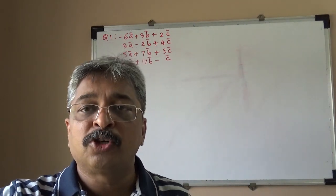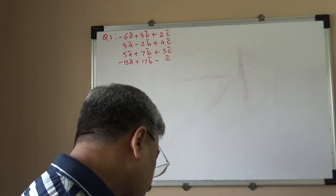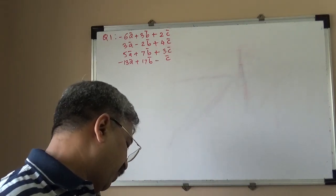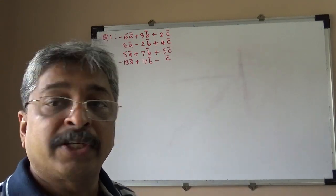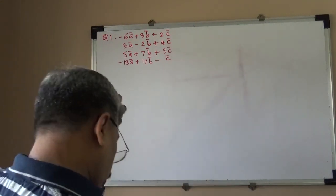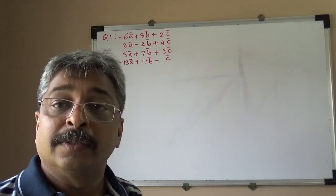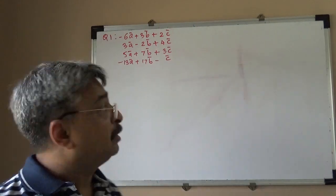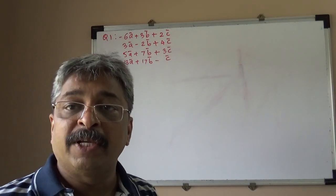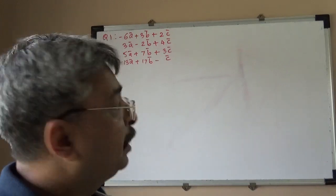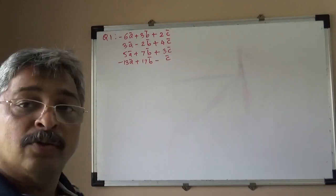Let us solve a few problems based on the theory we have developed. Suppose A, B, C are non-coplanar vectors and these are the position vectors of 4 points given in the plane; you are supposed to prove that these 4 points are coplanar. Pause the video and try your level best — it is a simple problem.